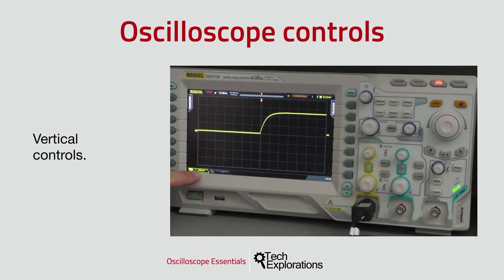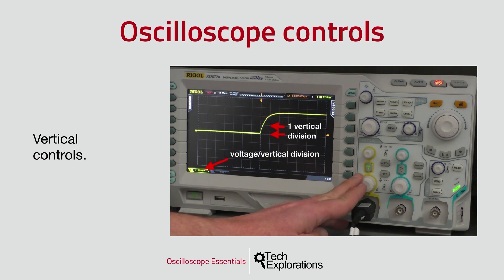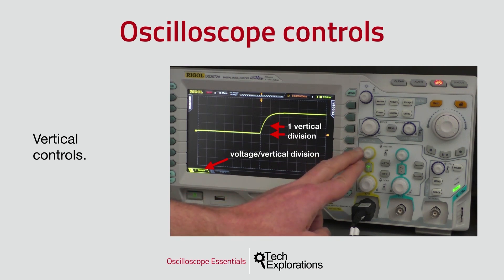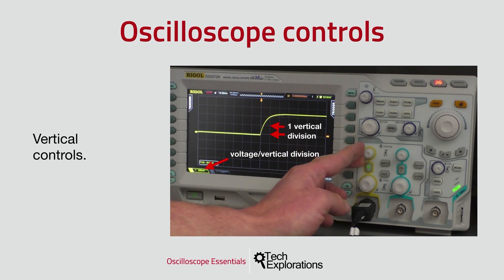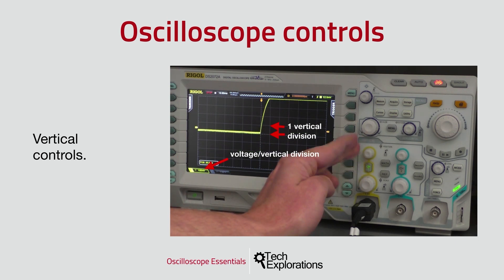Next up, the vertical controls allow you to work in the vertical voltage domain. Just like the horizontal controls, you can control two things. First, you can set the voltage differential represented by each vertical division — turn the scale knob to increase or decrease the voltage per division. My oscilloscope has eight vertical divisions, so with a scale of 200 millivolts per division, you multiply by eight to get the total voltage differential between the top and bottom of the screen. Second, you can set the vertical position of the waveform by turning the position knob to move it up or down.